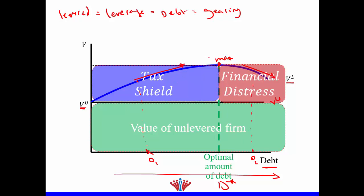In the rising portion of the curve, the impact of the tax shield is bigger than the impact of financial distress, which is why firm value increases. In the declining portion, the impact of financial distress is bigger than the impact of the tax shield, which is why the levered value decreases. At the maximum point — D* — the impact of the tax shield is exactly equivalent to the impact of financial distress.